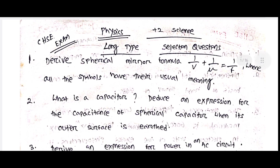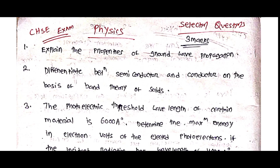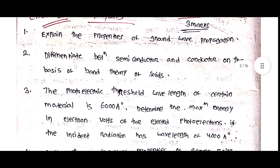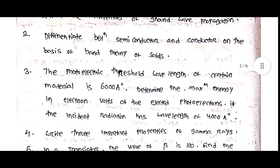These physics selection questions are very important for you. Explain the properties of ground wave propagation. Differentiate between semiconductor and conductor on the basis of band theory of solids.